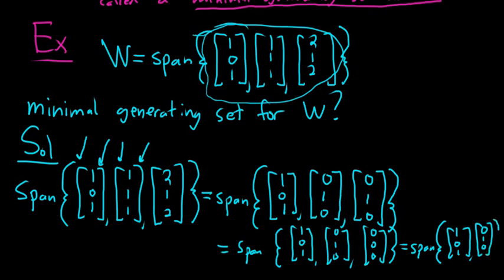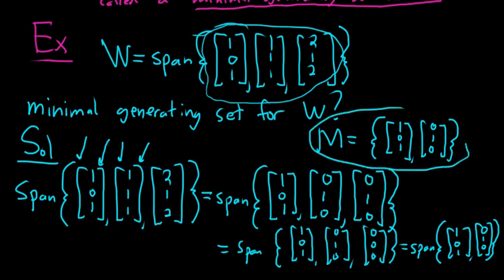And now we have our minimal generating set. So our minimal generating set, I'll call it M, is the set containing the vectors (1, 0, 1) and (0, 1, 0). So minimal generating set is a set which spans a subspace and has no redundant vectors.